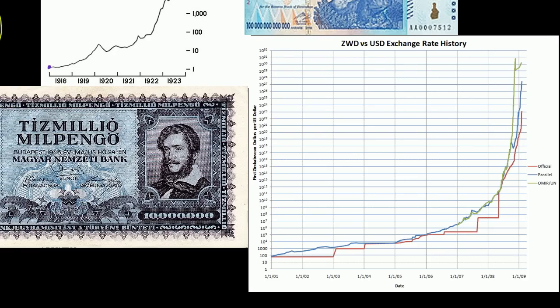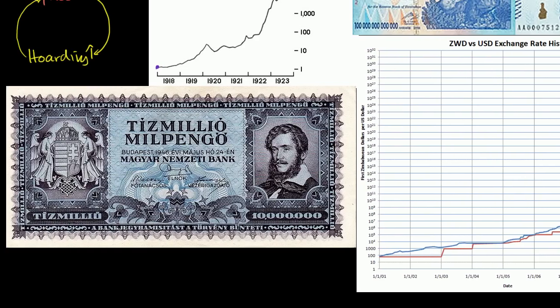And then the largest, or the most extreme hyperinflation ever, was Hungary after World War II. This right here is a 10 million Pengo note, just to give you an idea of what people were carrying around in their pockets.